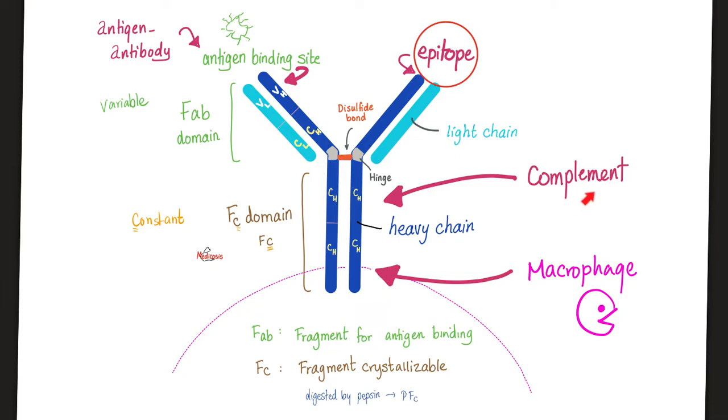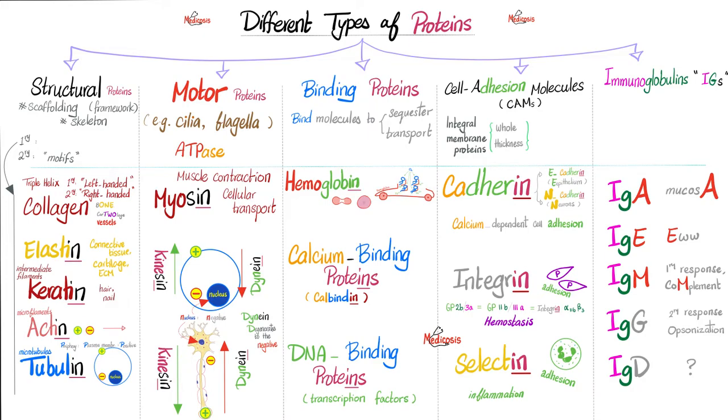I have many immunology videos on my channel, and I have a specific video for complement. We talked about the classical complement cascade, the alternative pathway, and the lectin mannose pathway. And there you have it, the different types of proteins in your body.